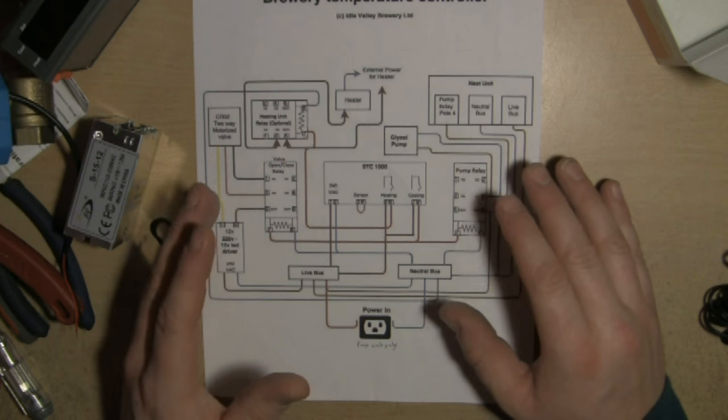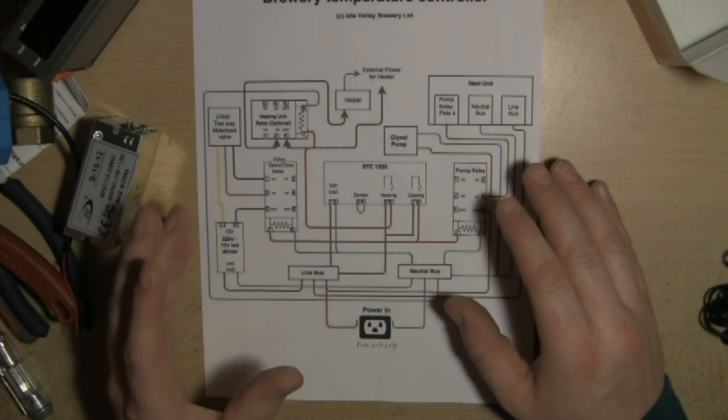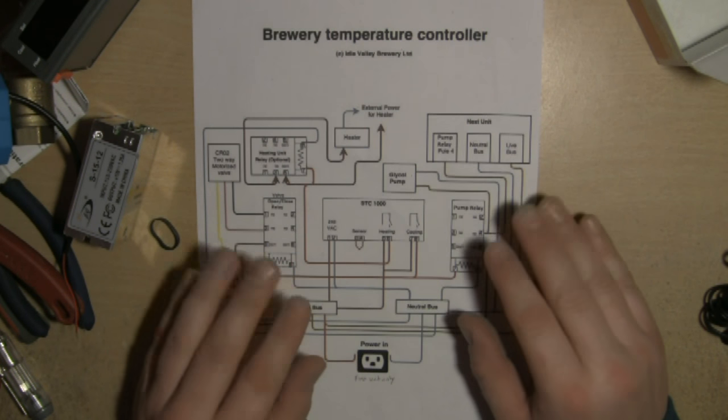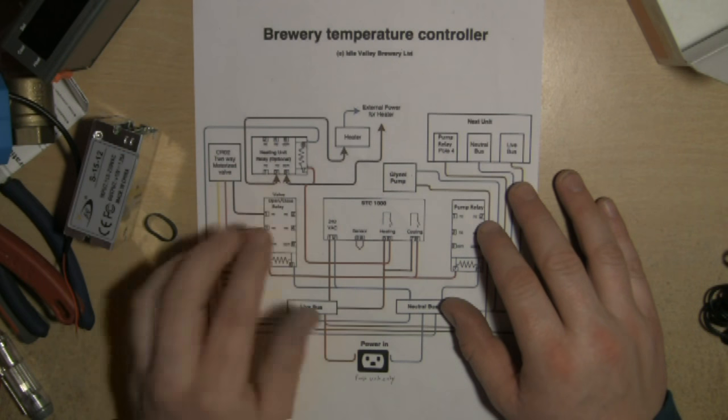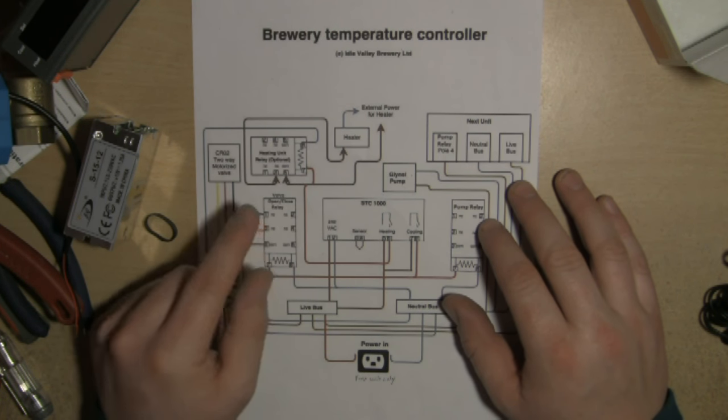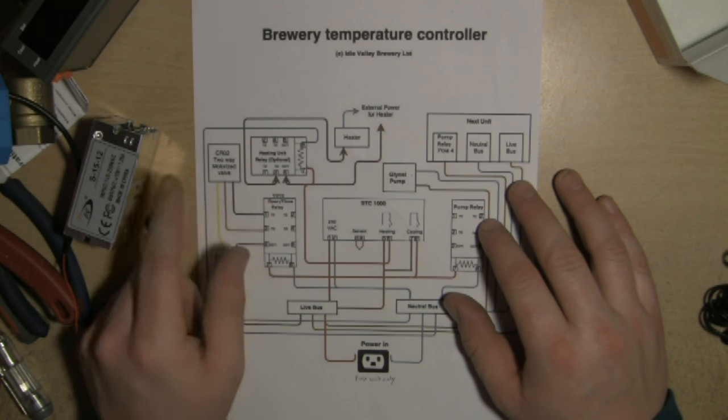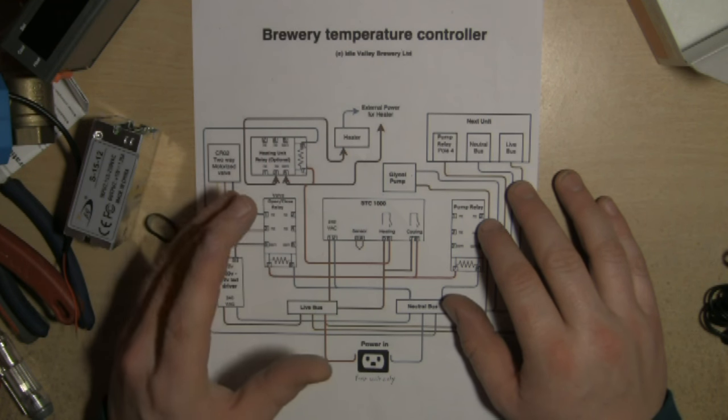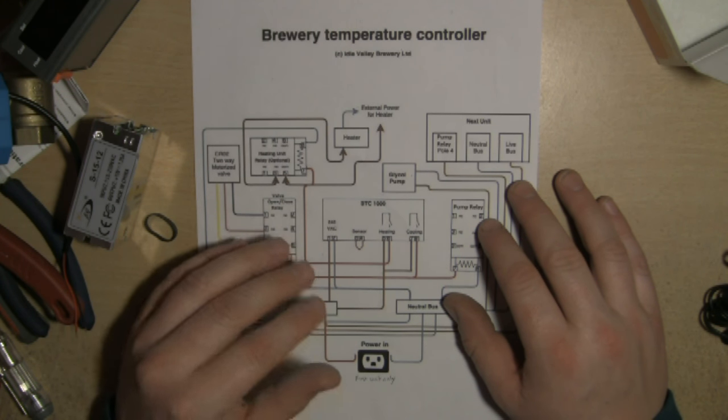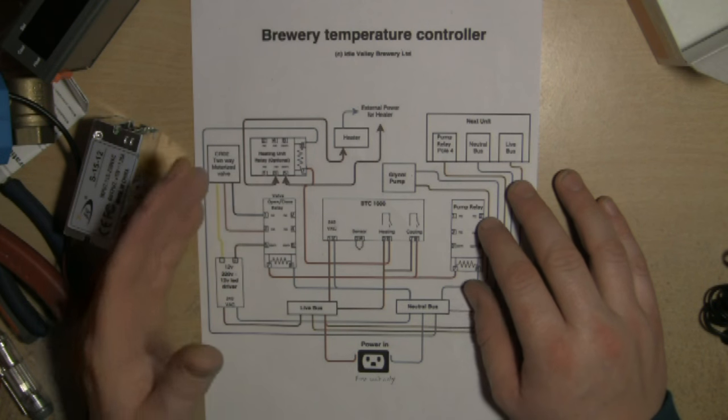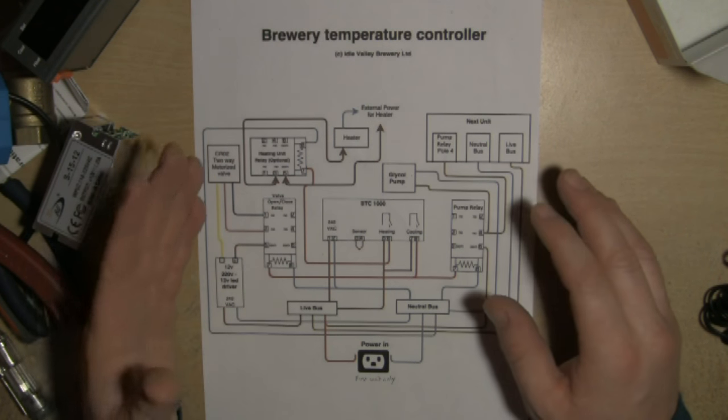This temperature controller also has a third option where if you want to, you can activate a heating unit as well. Let's say that you're fermenting beer in a particularly cold season. Right now it's winter time in the UK.